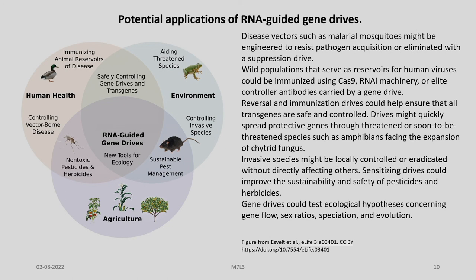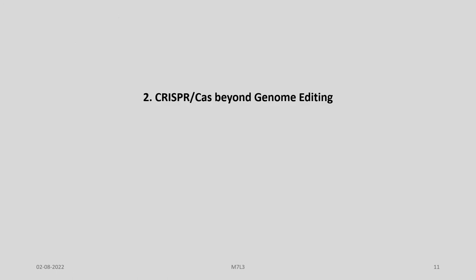Disease vectors such as malaria mosquitoes might be engineered to resist pathogen acquisition or eliminated with a suppression drive. Populations that serve as reservoirs for human viruses could be immunized using Cas9 RNAi machinery. Drives might quickly spread protective genes through threatened species such as amphibians facing the expansion of chytrid fungus. Invasive species might be locally controlled or eradicated without directly affecting others. Sensitizing drives could improve the sustainability and safety of pesticides and herbicides. Gene drives could also test ecological hypotheses concerning gene flow, sex ratios, speciation, and evolution.